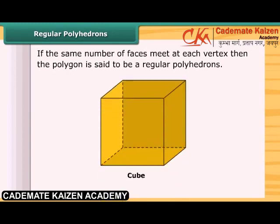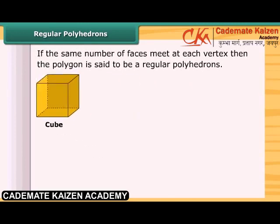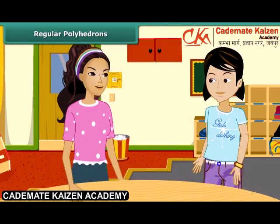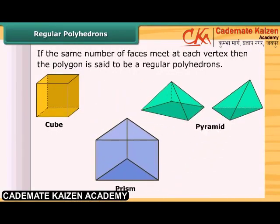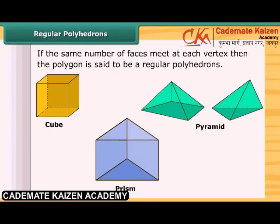A cube is a regular polyhedron because three faces meet at each vertex. We have two important members of the polyhedron family: prisms and pyramids. A prism is a polyhedron whose base and top are congruent polygons and whose lateral faces are parallelograms. A pyramid is a polyhedron whose base is a polygon of any number of sides and whose lateral faces are triangles with a common vertex. If you join all the corners of a polygon to a point not in its plane, you get a model for a pyramid.